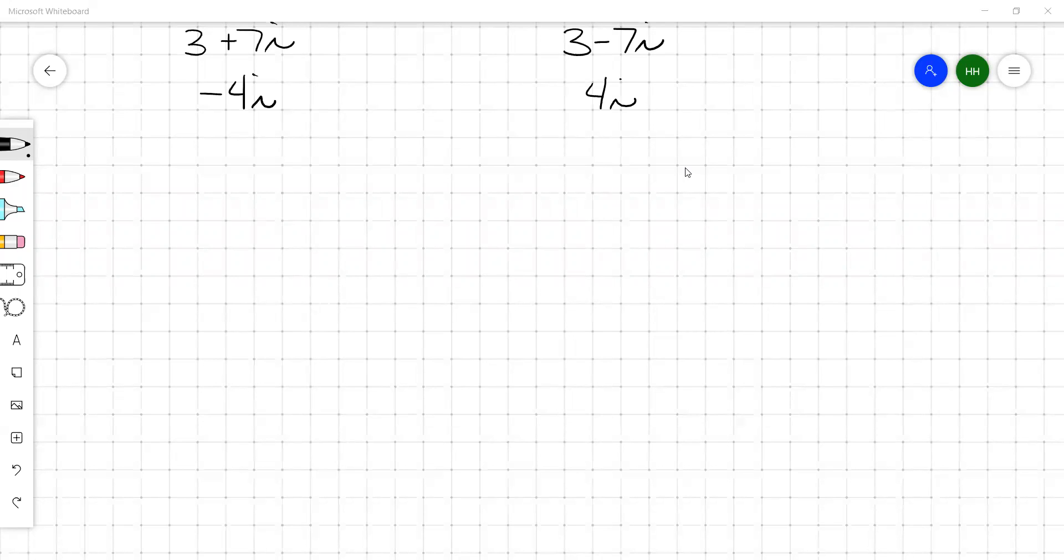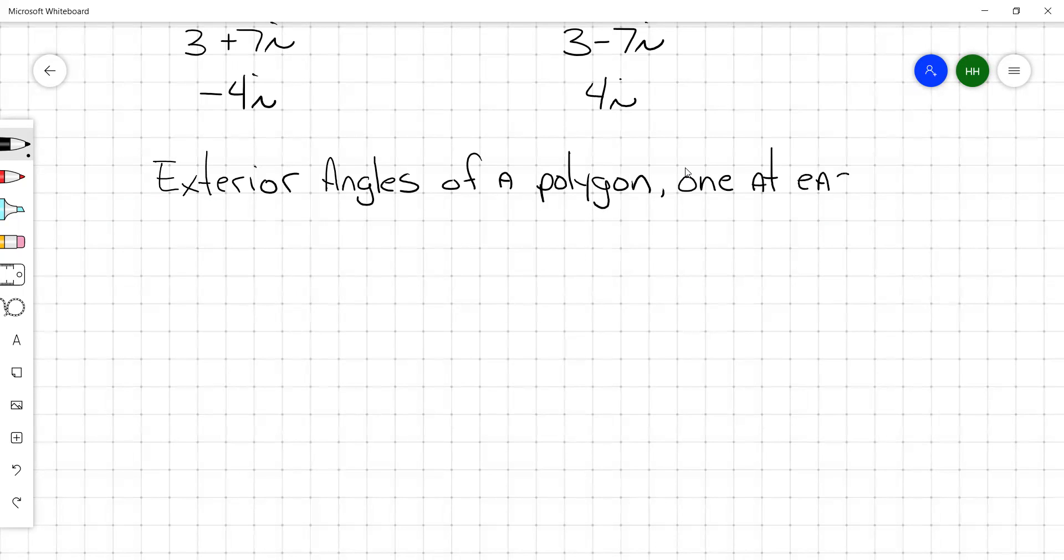All right. Yesterday, we talked about interior angles, and today we're going to talk about exterior angles. Exterior angles of a polygon, one at each vertex, sum 360 degrees for all shapes.